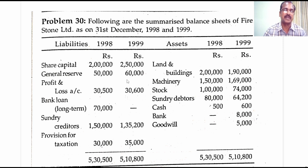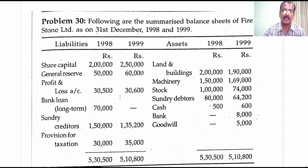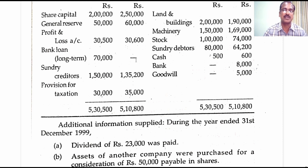Let's have a look at the items given on the liability side of the balance sheets. Share capital: you find an increase in the value of share capital — we will prepare a ledger account and come to know the reason. General reserve: you find an increase in the value of general reserve. Profit and loss account opening and closing balances are given. Bank loan long term: opening was 70,000, closing is nil. This is nothing but repayment of the bank loan during the current year, which is an application of funds that would be taken over to the funds flow statement.